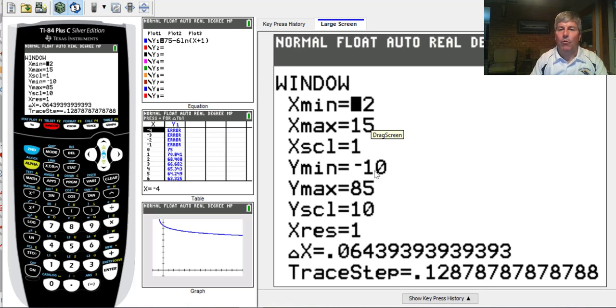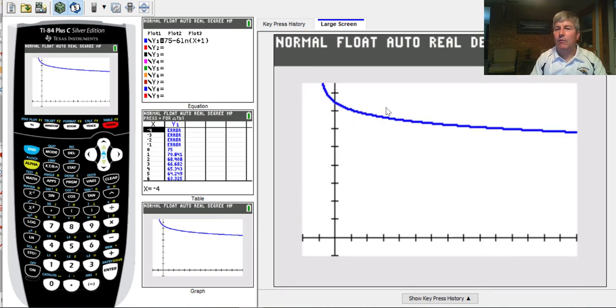My y-min, I went all the way down to negative 10 because I wanted to see the x-axis. And my y-max, I did a little bit above 75, so I went to 85, and I'm going to count by 10's. So that's what I did for my window, and then I graphed it, and that was the graph I got.